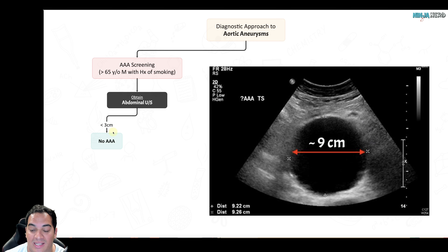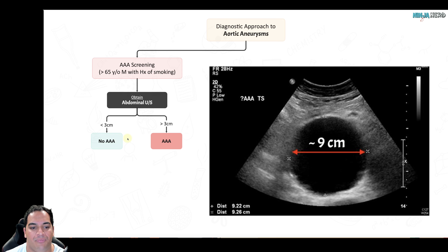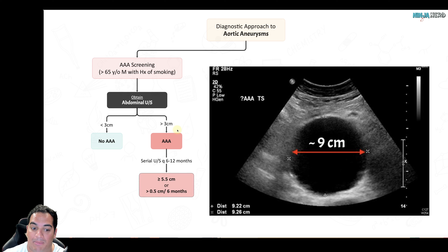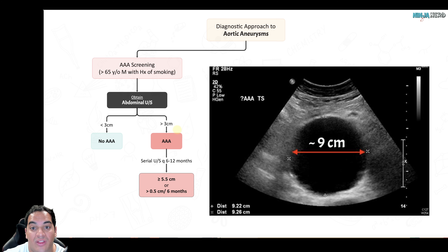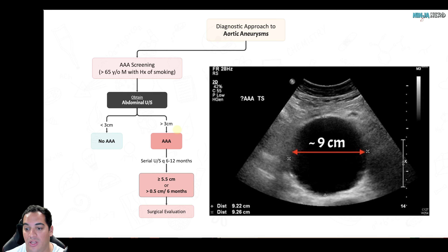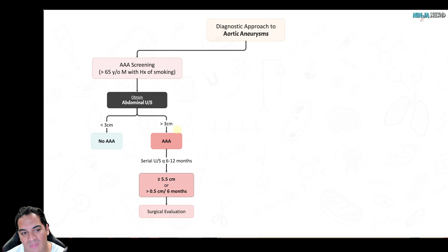On abdominal ultrasound screening: if the aorta is less than 3 cm, there is no triple A and no further monitoring is needed. If it is greater than 3 cm, repeat ultrasound in 6 to 12 months. If the size is greater than or equal to 5.5 cm, or it grew more than 0.5 cm in 6 months, consult surgery for elective surgical repair.